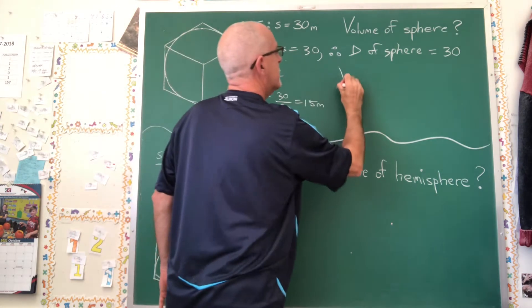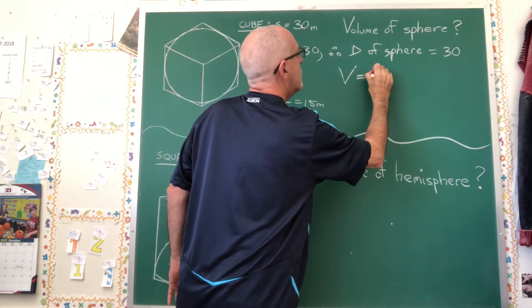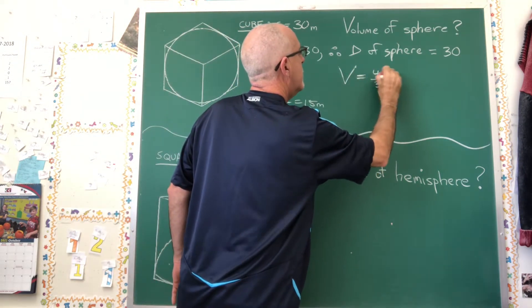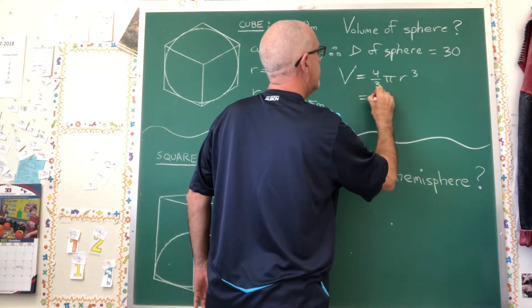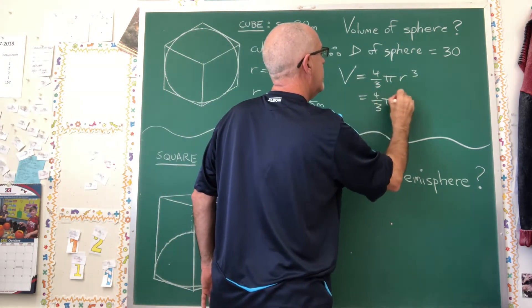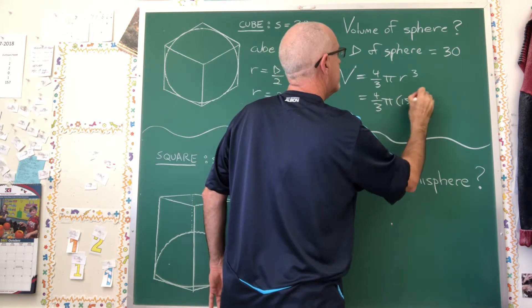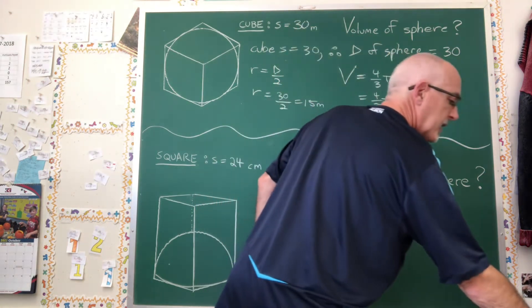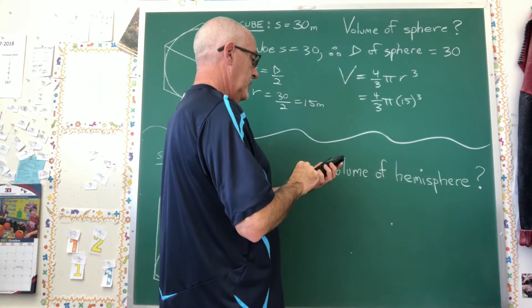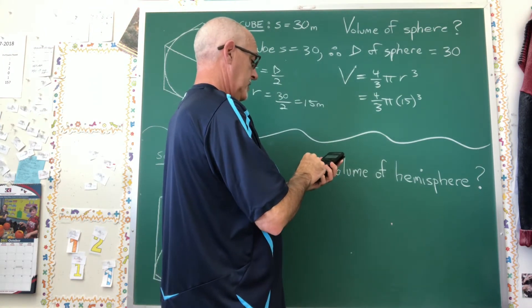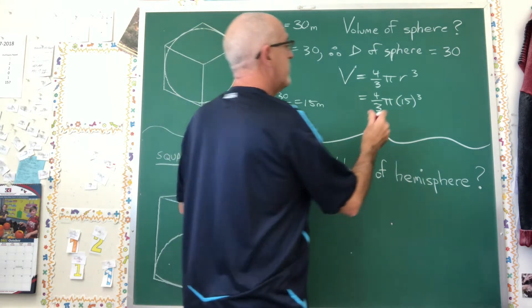Now I can use my volume of the sphere formula: 4/3 πr³ is 4/3 π times 15 cubed. I'll get out my calculator. 15 cubed is 3,375.